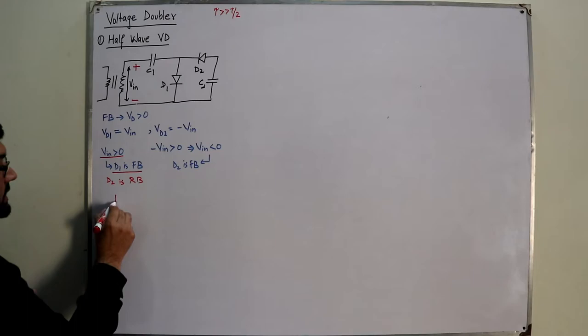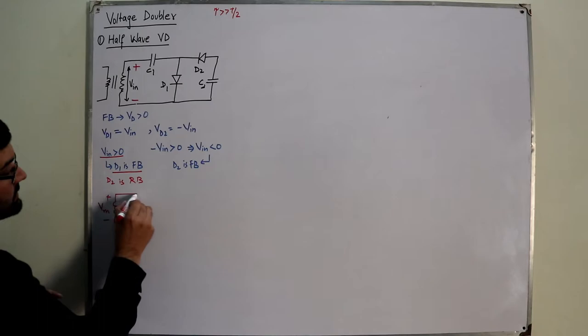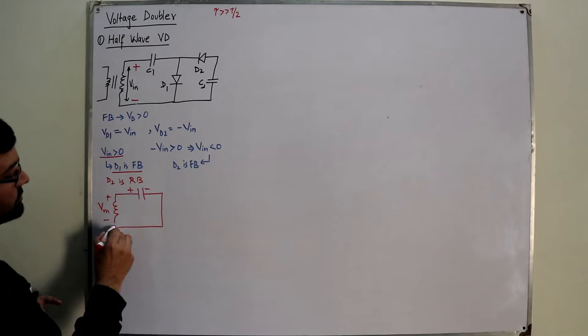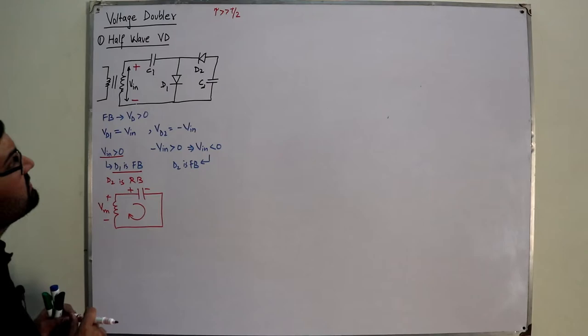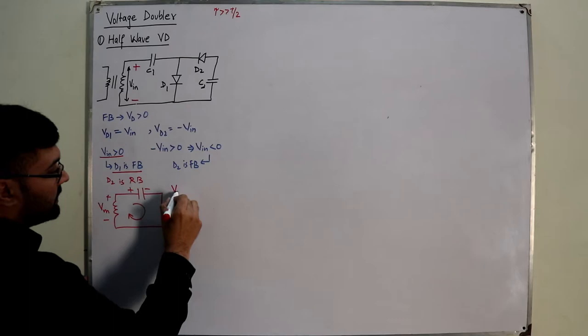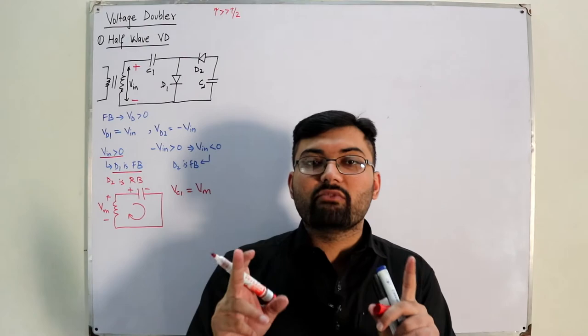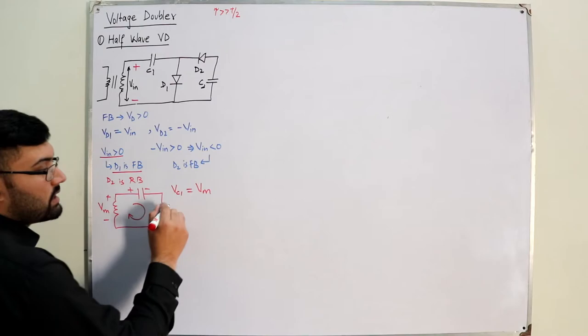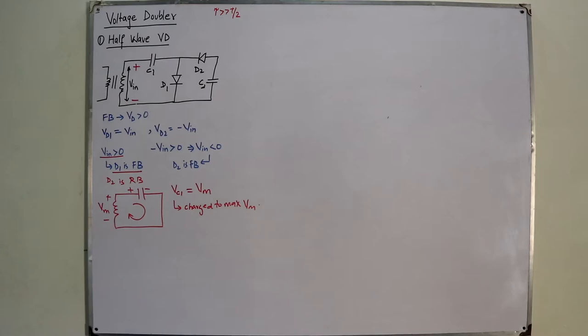For the positive half cycle, D1 is forward biased and D2 is reverse biased. In the equivalent circuit: the input is plus-to-minus at peak value Vm, D1 is shorted, D2 is open. Current flows through the circuit and C1 charges up. The maximum value it attains — the fully charged value — is Vm. C1 is charged to Vm, and it will not discharge quickly due to the large time constant.